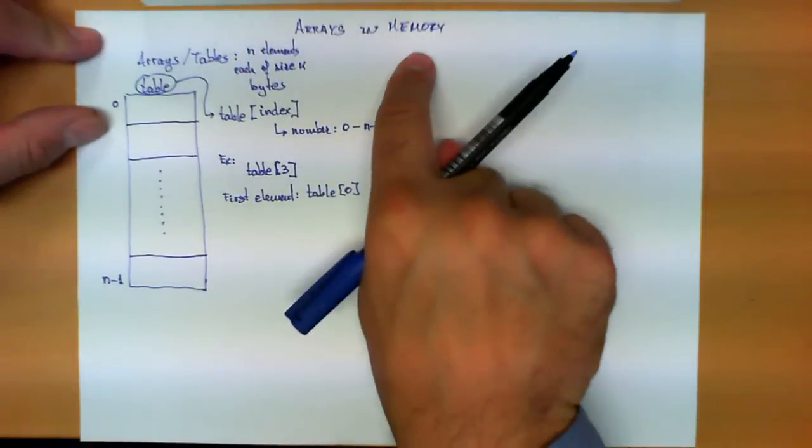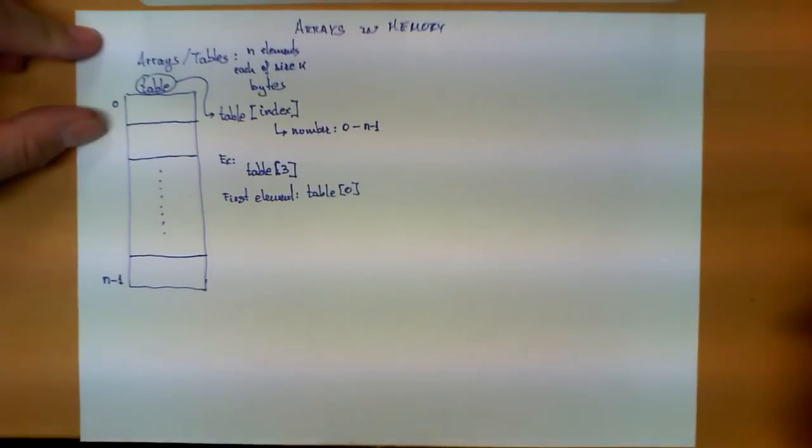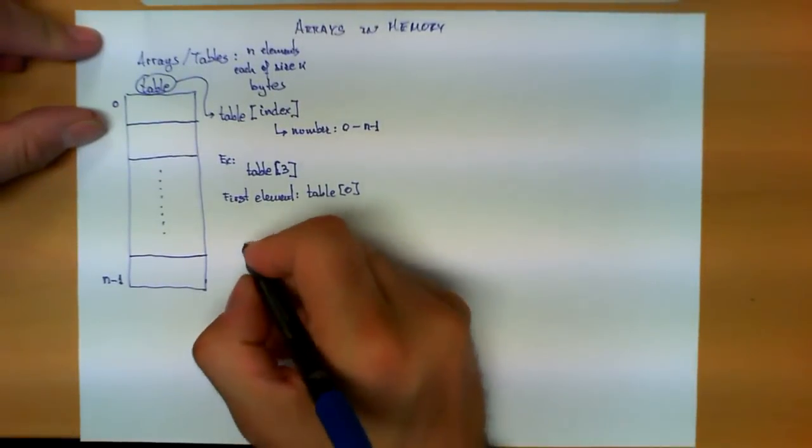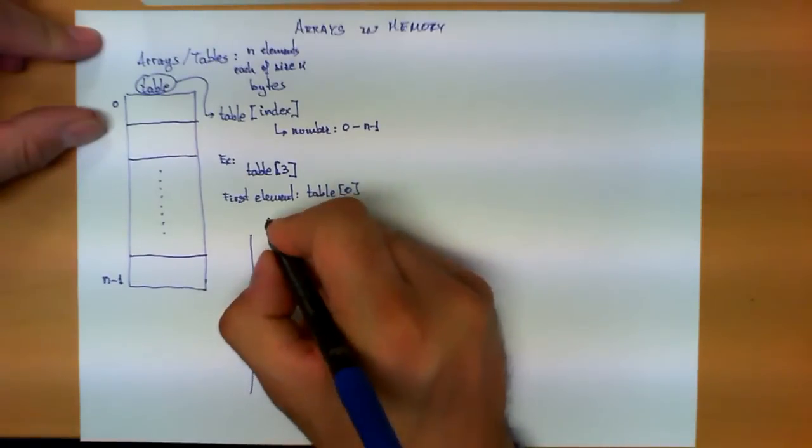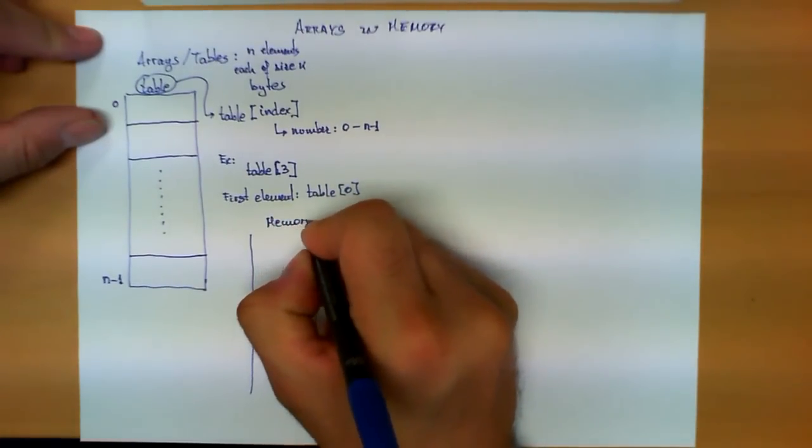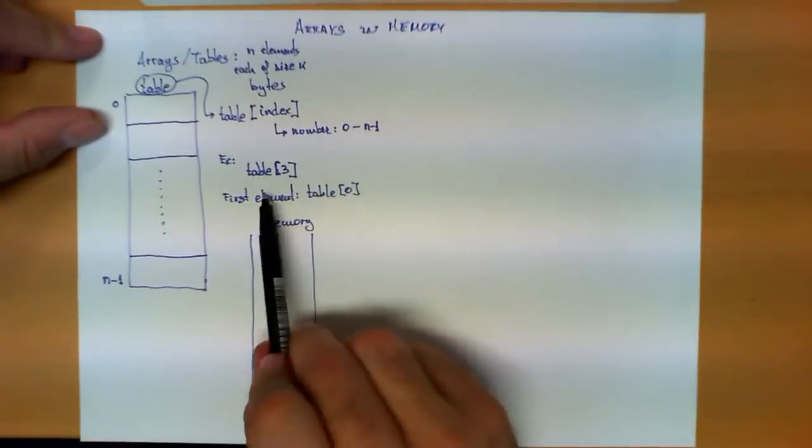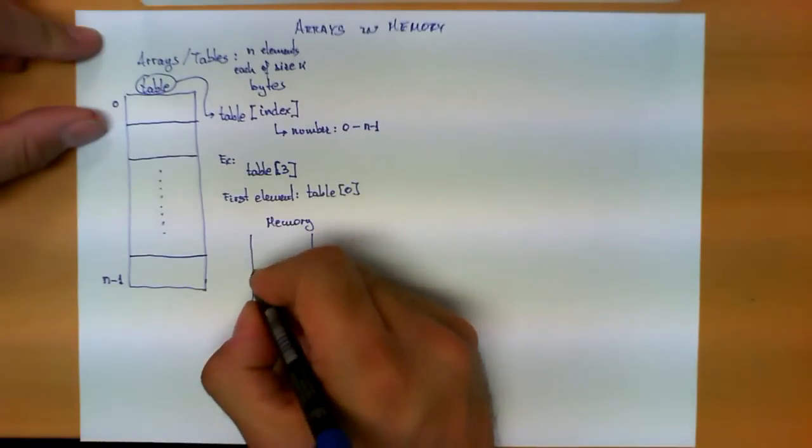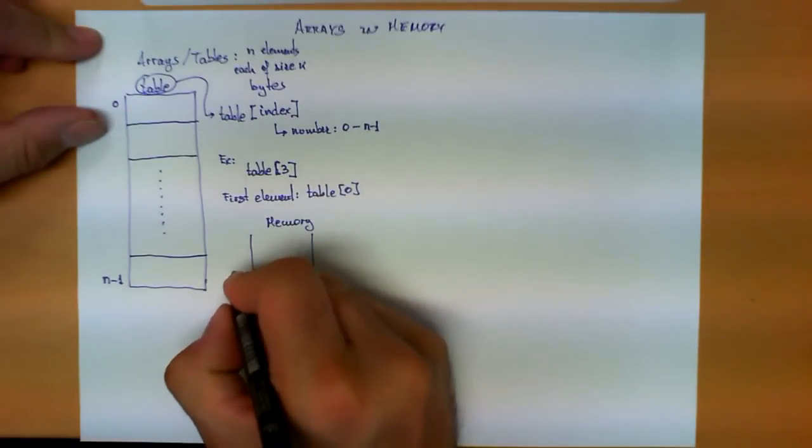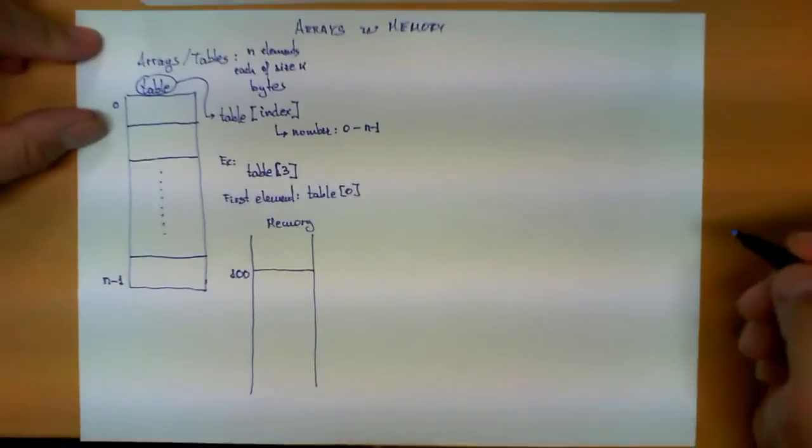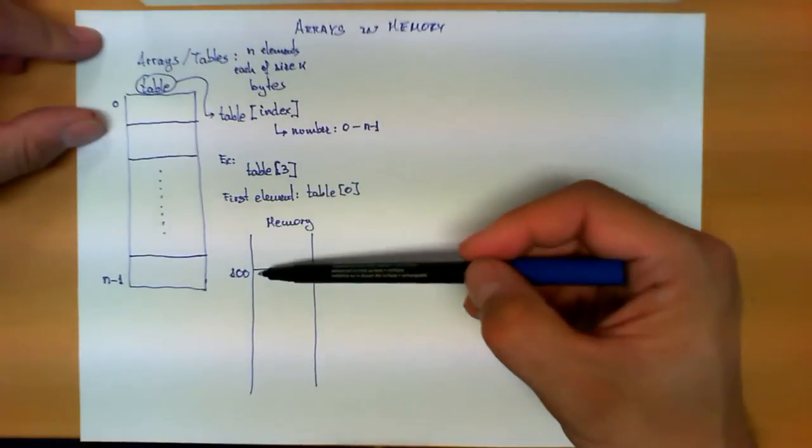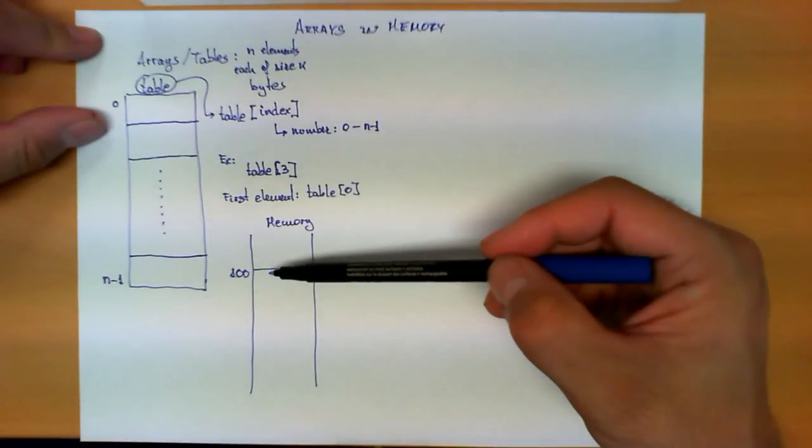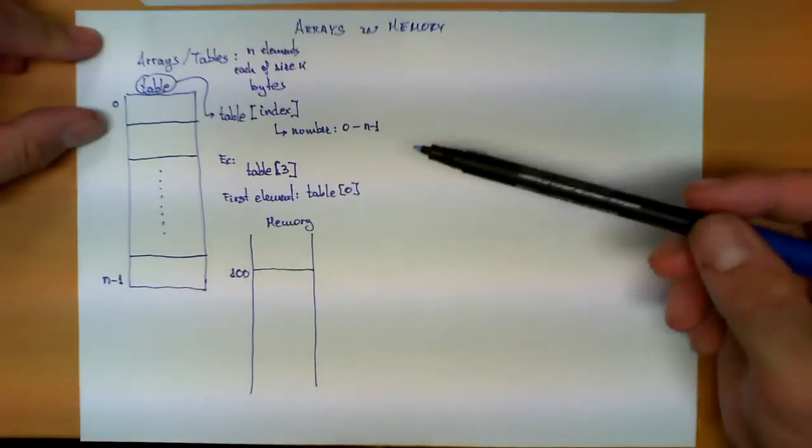Now, let's see how this data structure would map into the memory of a computer system, and it's actually fairly straightforward. Let's assume this is the memory, and let's pretend that this data structure is stored beginning at the address 100. In other words, the first byte of the first element of this table is stored in position 100, then 101, 102, so on and so forth.